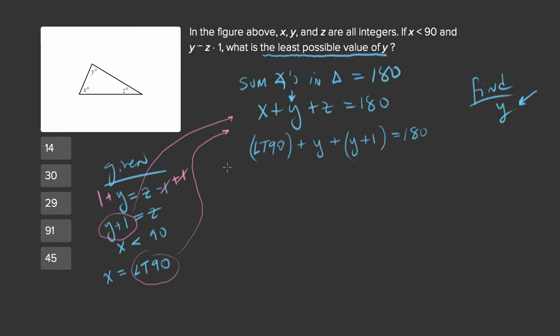Now we have one equation and one variable and we can solve for it. So let's start collecting like variables. So we end up with less than 90 plus 2y plus 1 equals 180.